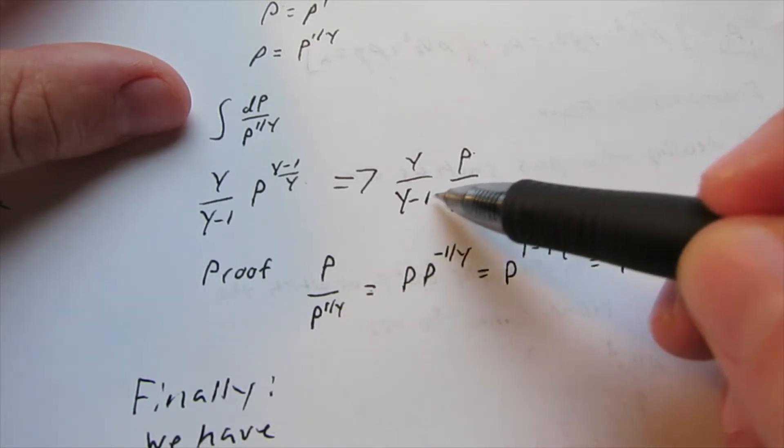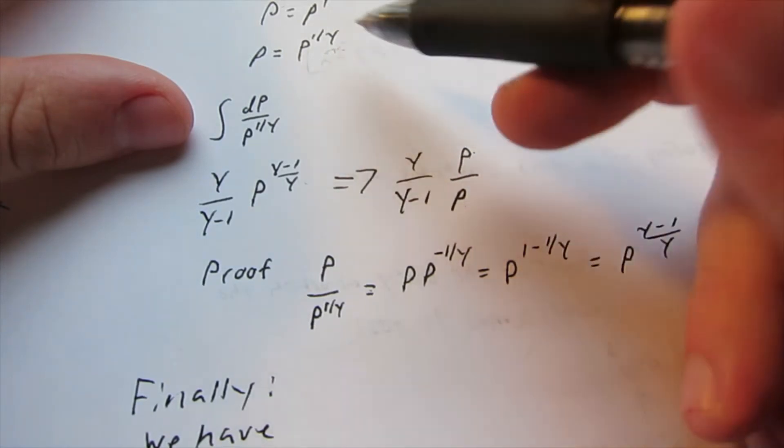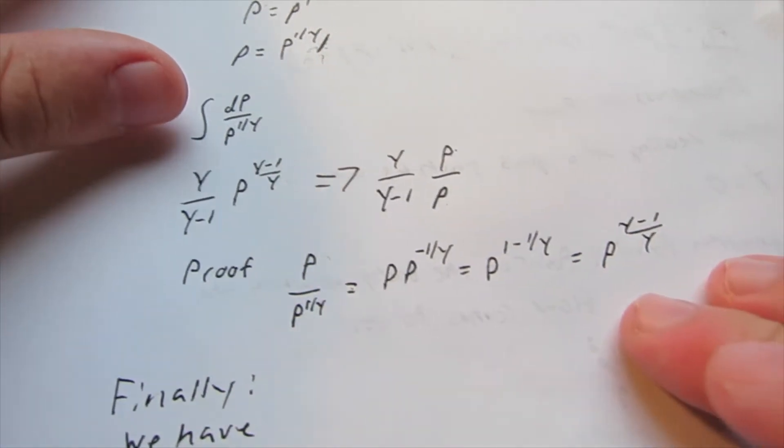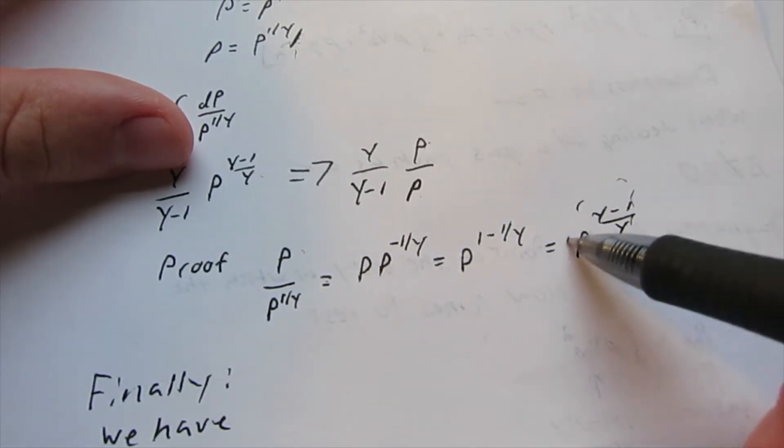Because we know density is this value here, divided by that, do some algebra, and we get this back.